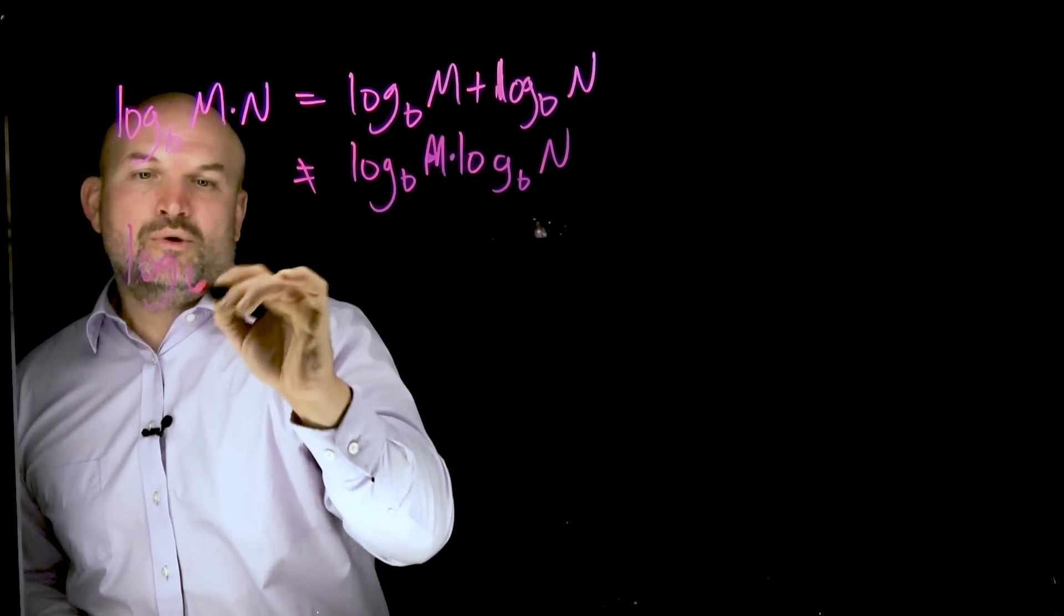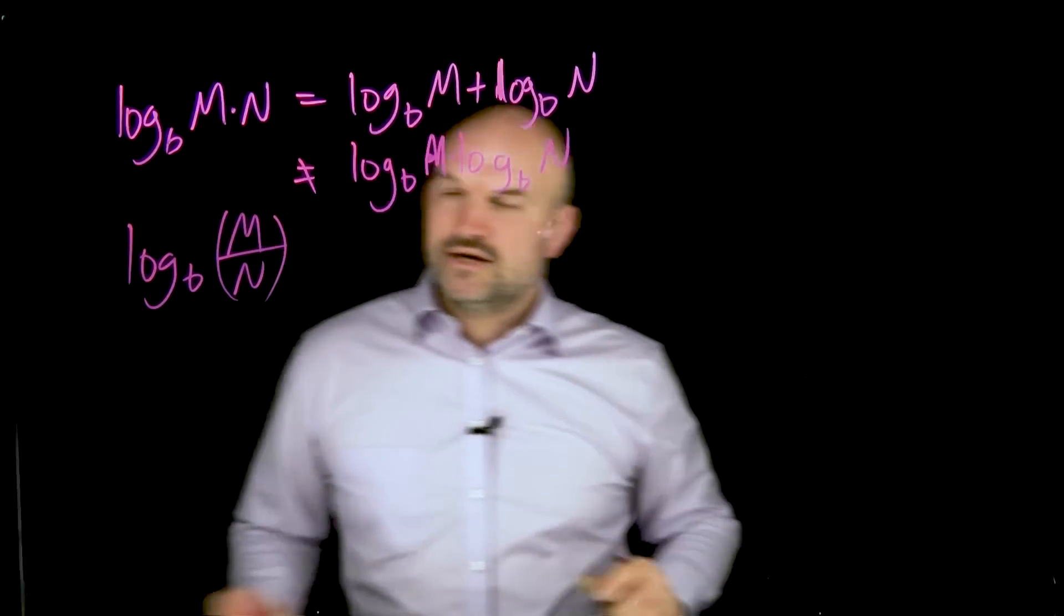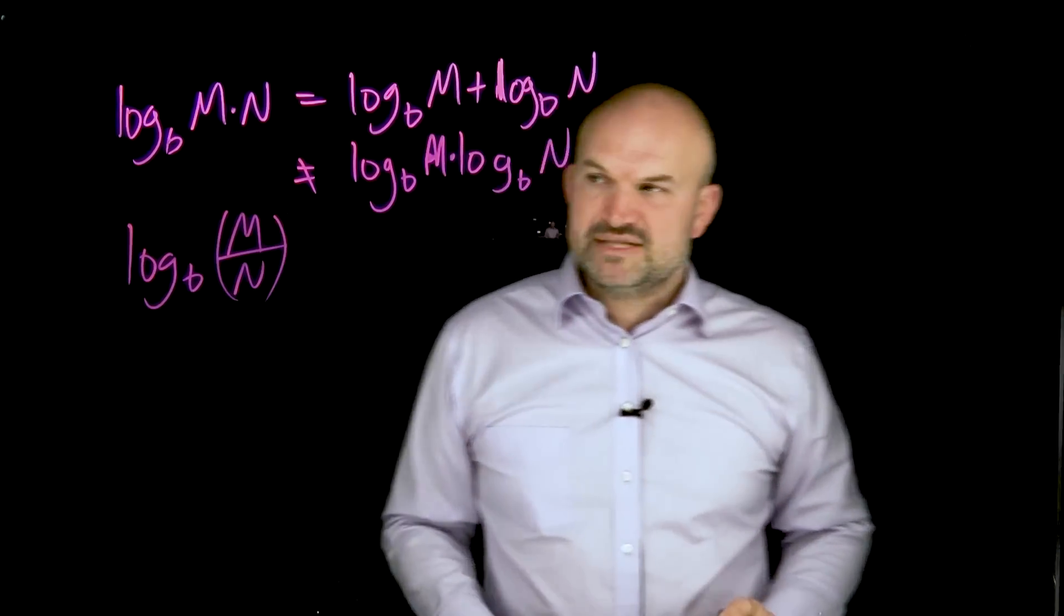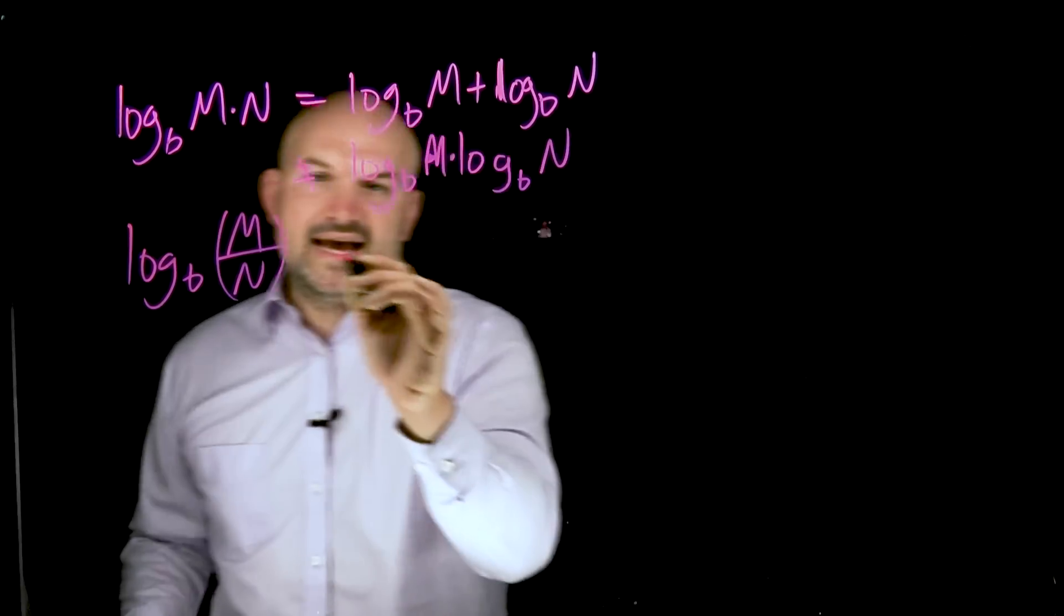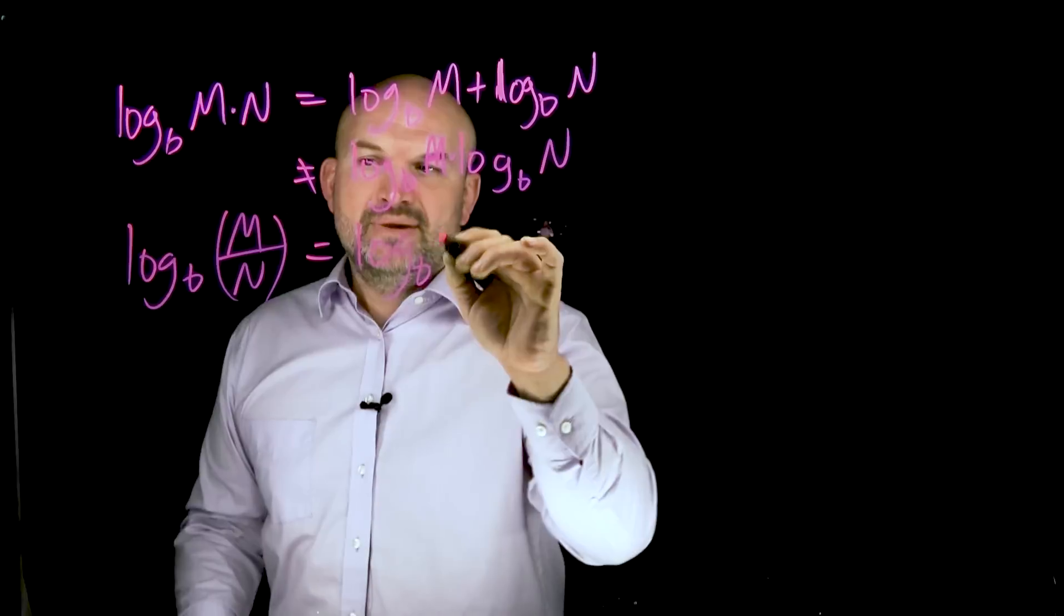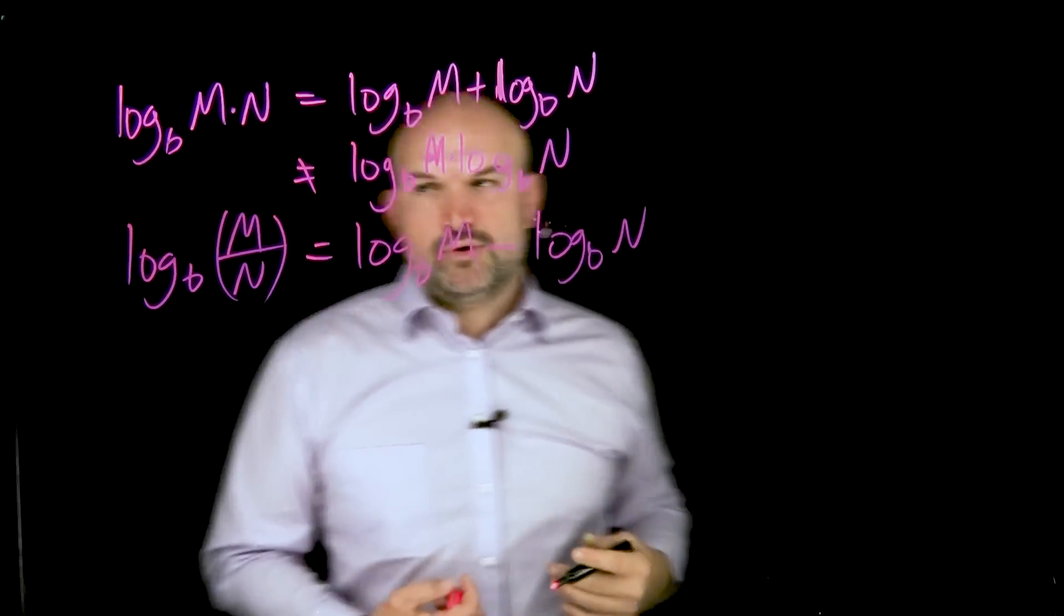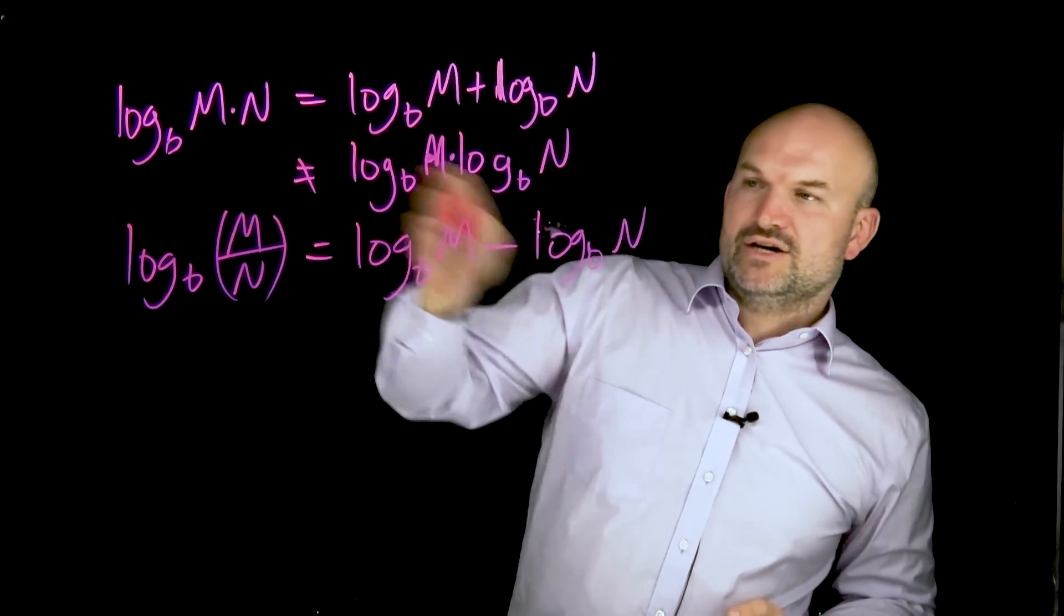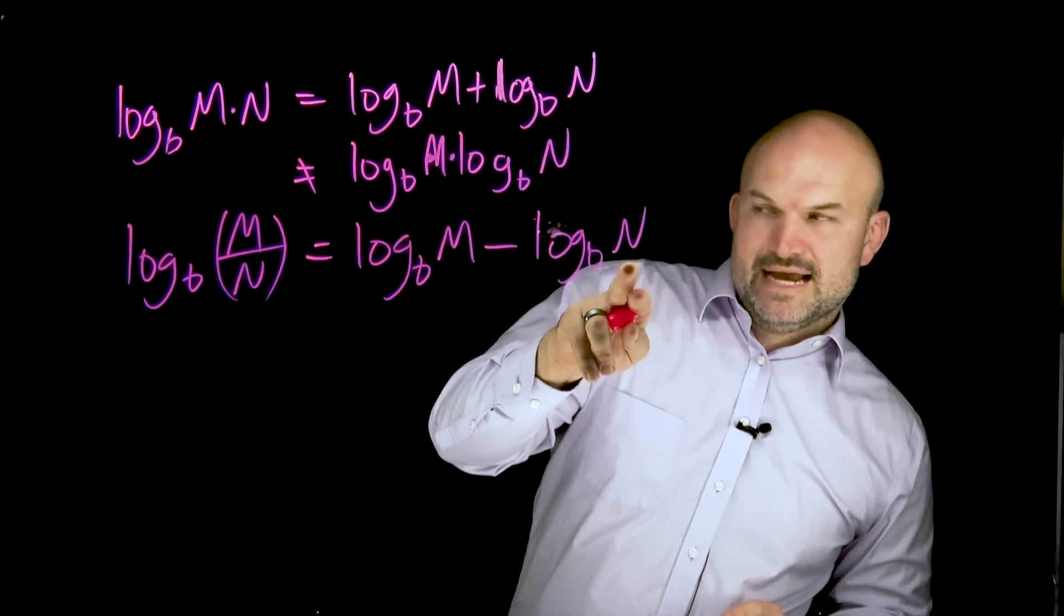The other thing, it also works for what we call the quotient rule. If I have the quotient of two arguments or two expressions inside the argument of my logarithm, rather than rewriting that as the sum, I can now expand that out to two different logarithms with the same base as my original logarithm, but it's now going to be the difference of these two logarithms. And again, it's really important for you to recognize that my numerator is always going to come first and I'm going to be subtracting the argument from my denominator.